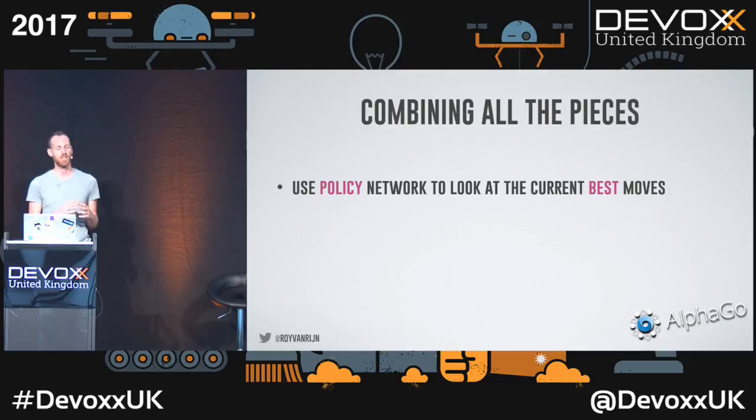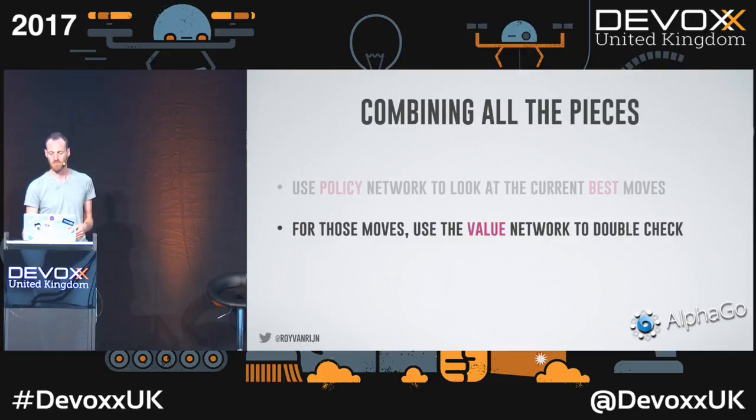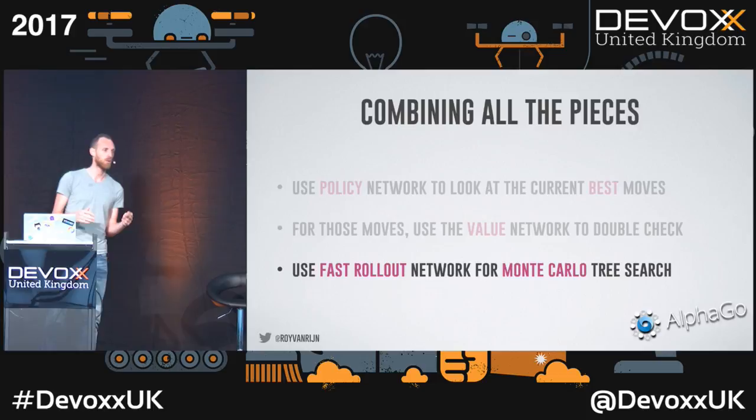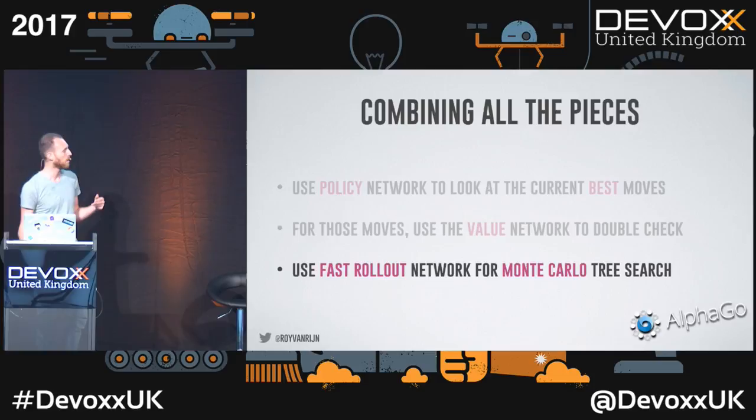Then they combined all the pieces. They used the policy network to look at the best moves, the value network to check which of those moves have the highest probability of winning, and the fast rollout network — 1500 times faster — to Monte Carlo play to the end and verify it's actually a good move. Those three values are combined together to decide which move AlphaGo is going to play.